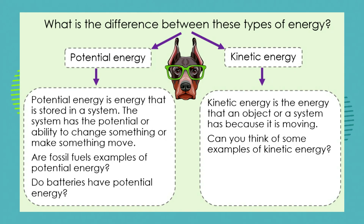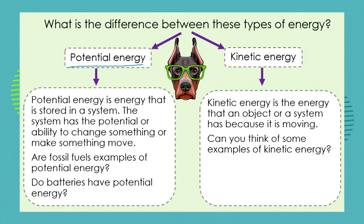So what we've done today is established that, apart from sources of energy, we can recognize energy in action. We call something potential energy if it is stored in a system, and kinetic energy if it is moving. If we looked at fossil fuels — are they examples of potential energy? Yes, they are, because coal has the potential to deliver heat energy, which is kinetic energy. Do batteries have potential energy? Yes — they have chemicals inside them which have the potential to release energy as work and action.